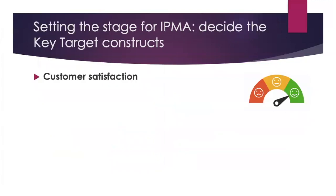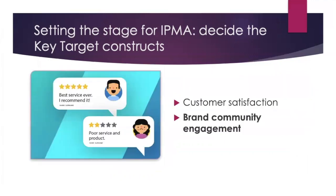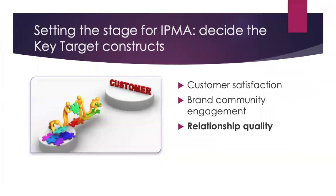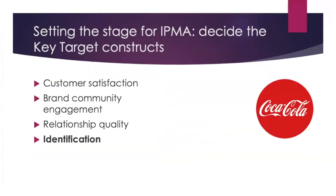We'll consider the key target constructs for this example. The first construct is customer satisfaction, which is the extent to which the product's perceived performance matches a buyer's expectations. We then have engagement, which has been defined as a customer's behavioral manifestations that have a brand or firm focus beyond the mere purchase, resulting from motivational drivers. We also have relationship quality, which is known as the degree to which the consumer views the brand community as a satisfactory partner in an ongoing relationship. And finally, we have identification, which basically refers to how members feel as if they are a part of the brand community.